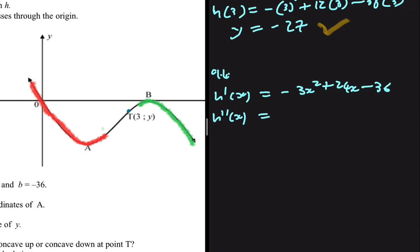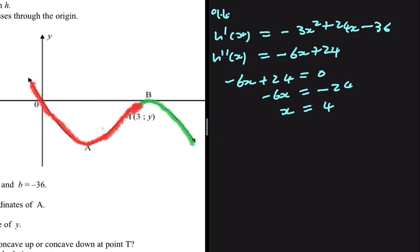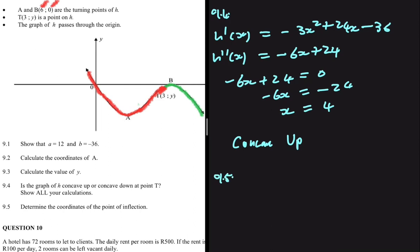The first derivative is minus 3x squared plus 24x minus 36. Differentiating again gives h''(x) equals minus 6x plus 24. Setting this to zero: minus 6x plus 24 equals zero, so x equals 4. Our concavity changes at x equals 4. Since T is at x equals 3, which is less than 4, the graph is concave up at T.